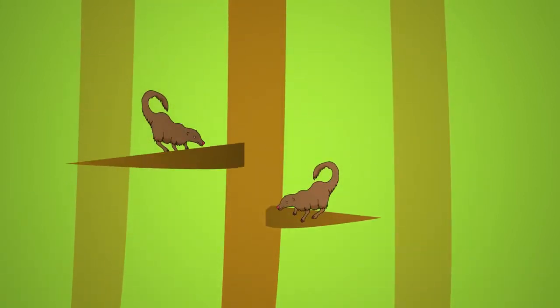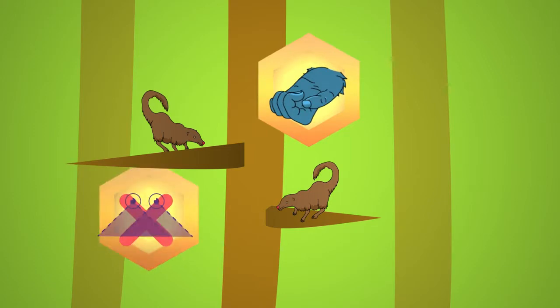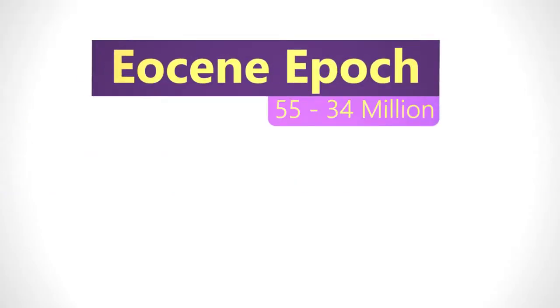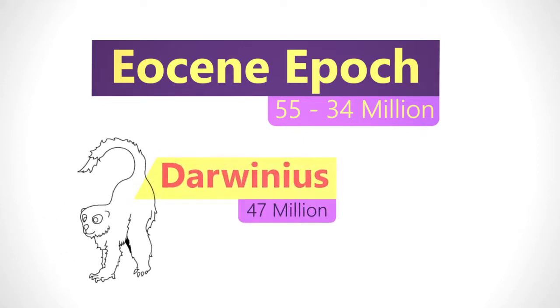Fossils show us that protoprimates had grasping hands and feet, but their eyes were still definitely on the sides of their heads rather than having stereoscopic vision. The Eocene epoch, about 55 to 34 million years ago, saw the emergence of the first monkey-like primates with forward-facing eyes.